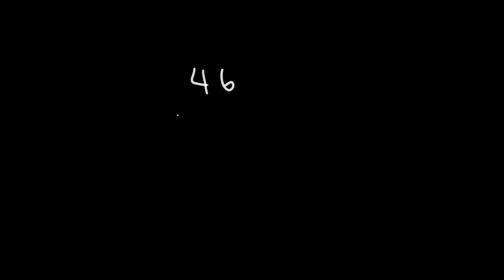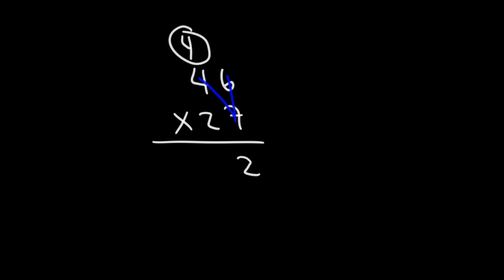Now let's try an example that is a little bit harder. Let's multiply 46 by 27. If you want to try it yourself, feel free to pause the video and work on it. So let's begin by multiplying 7 by 6. 7 times 6 is 42, so we're going to write the 2 and carry over the 4. Next we have 7 times 4 which is 28, and then we need to add 4 to 28. So 28 plus 4 is 32.